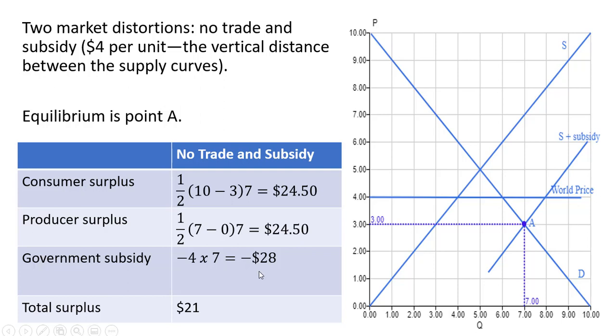Now the government subsidy, this is going to be an outflow, so it's a negative. So the government is subsidizing seven units at $4 per unit. So we have a government expenditure here of $28. Adding up these three numbers, total surplus or economic welfare is $21.